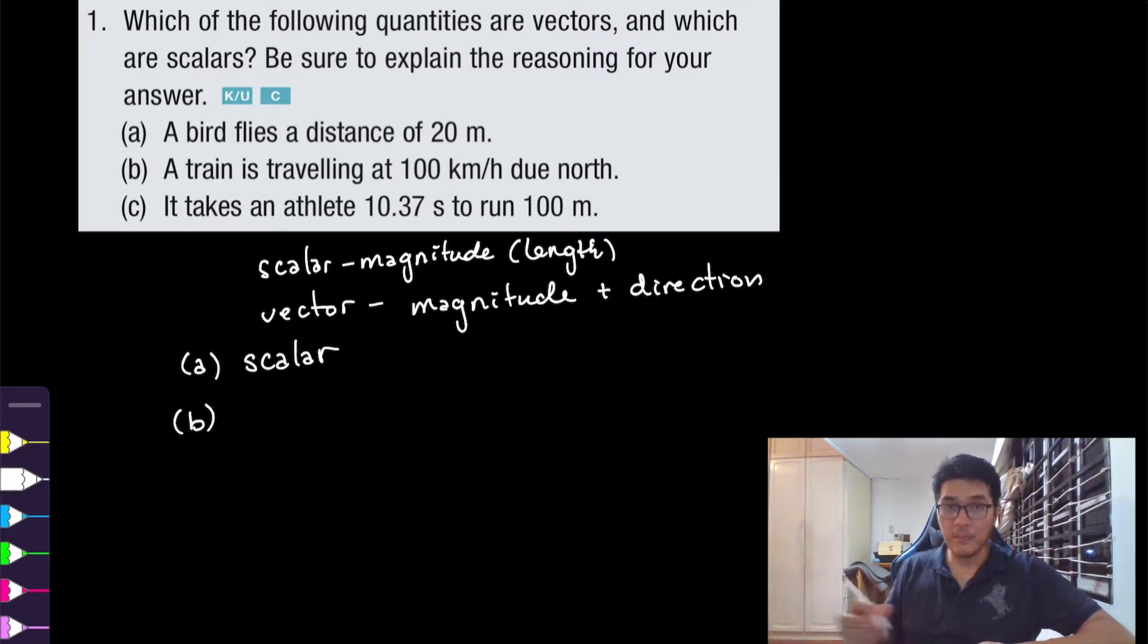For part B, a train is traveling at 100 kilometers per hour due north. In this case they're giving us both a magnitude which is 100 kilometers per hour and a direction which is due north. So this would be considered a vector quantity.